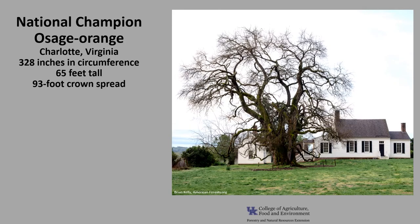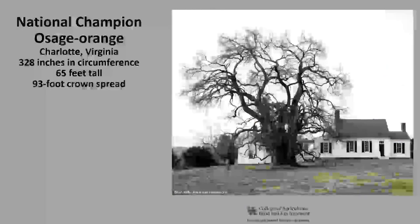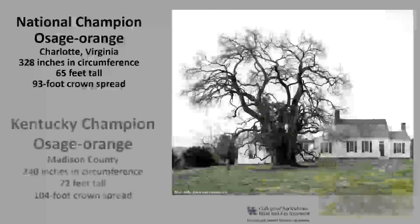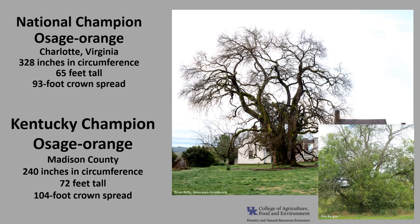The National Champion Osage Orange as of 2021 is in Charlotte, Virginia. It is 328 inches in circumference, 65 feet tall, with a 93-foot crown spread. The Kentucky Champion Osage Orange is in Madison County. It is 240 inches in circumference, 72 feet tall, with a 104-foot crown spread.